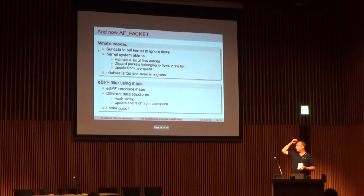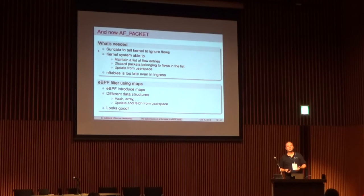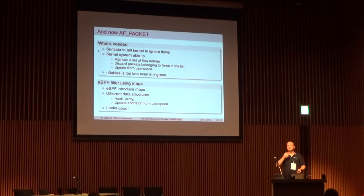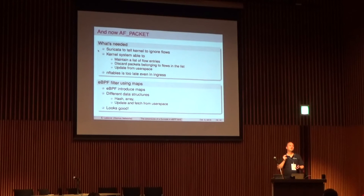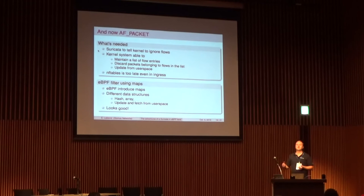I tried with NF tables ingress queue but it was a bit too late in the pipeline. What we've been talking about all week is eBPF. By using an eBPF filter, I can have maps. In maps I can have hash tables. If I can have hash tables, I can have a flow table. Then I can use that to populate a flow table from user space and manage to do the bypass.